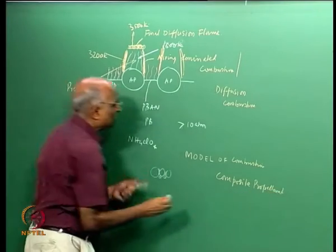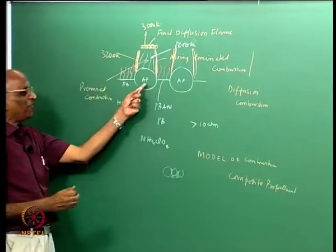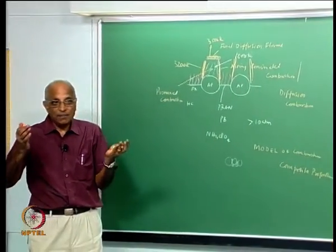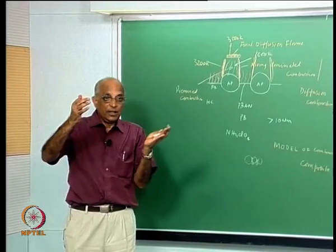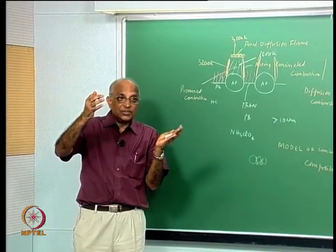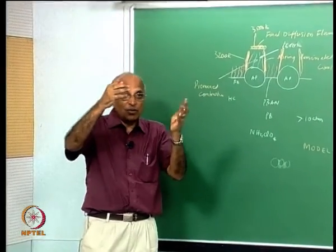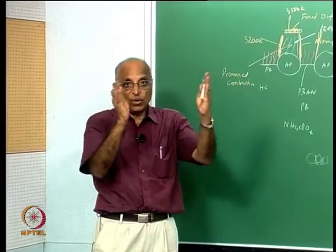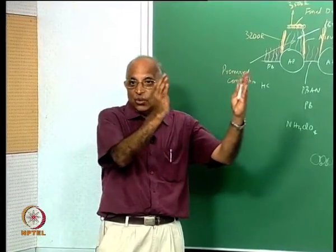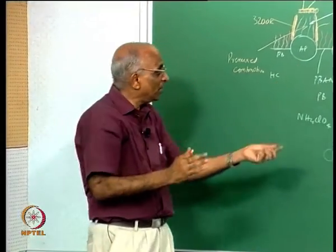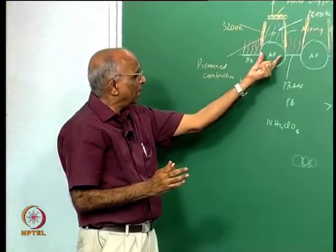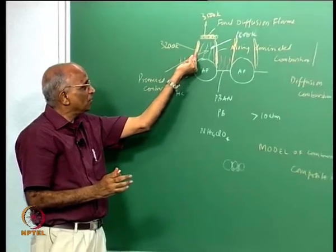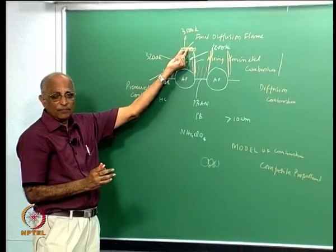For double base propellant we had aldehydes, NH2, and NO coming over the surface; you had a fizz zone, a dark zone, and the second luminous zone. Whereas here for composite propellants we have a premixed zone, a first diffusion flame, and a second (final) diffusion flame.